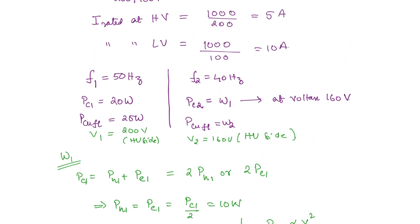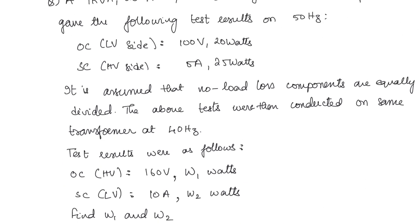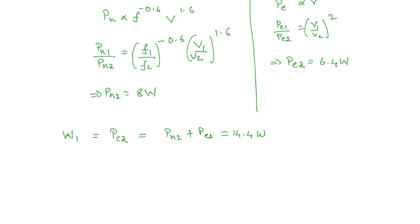For W2, the SC test at 40 hertz is conducted on the LV side where 10 amperes is the rated current — that is a full load condition. Also, the first SC test was conducted on the HV side at 5 amperes, the rated current. So 25 watts is the full load copper losses, and W2 = 25 watts.